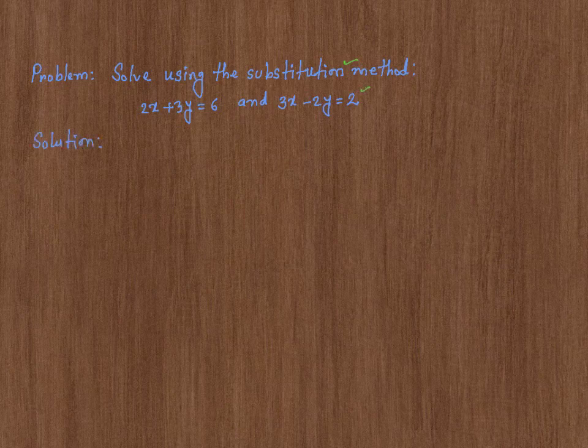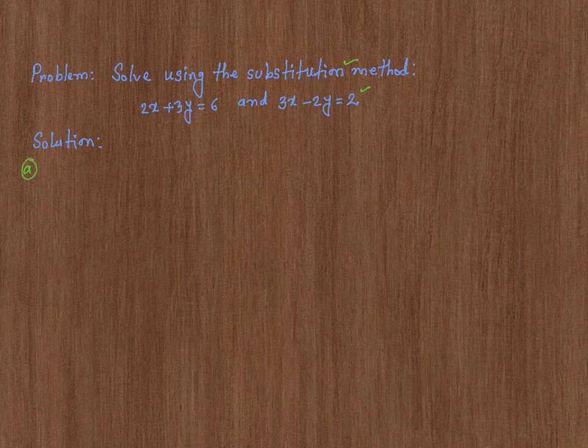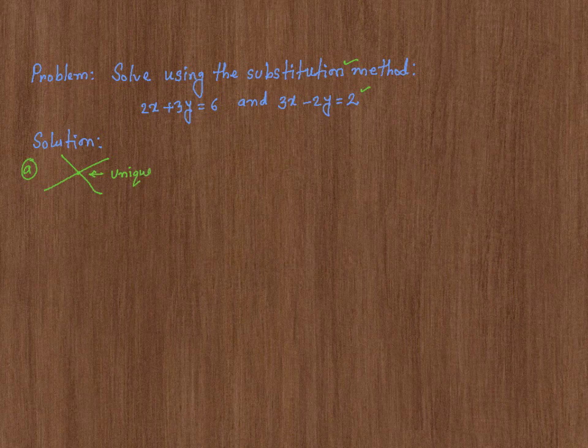Before I solve the system, let me touch on three different scenarios that could happen for a system of linear equations with two equations. That means we are dealing with two straight lines. One possibility is that they have a unique solution when the lines intersect at a single point.